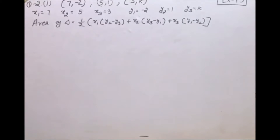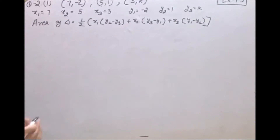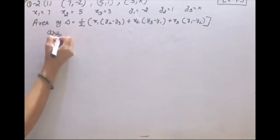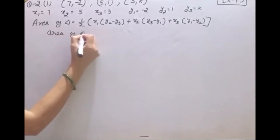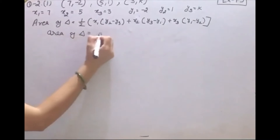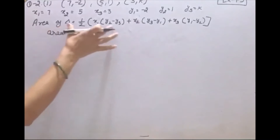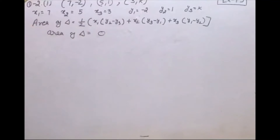Coordinate geometry में collinear condition given होती है तो हमारे पास triangle का जो area है उसको equal to 0 put करेंगे। तो given है हमारे पास collinear points, condition हो जाएगी: area of triangle equal to 0। यह हमारे पास condition होती है जब collinear points given होते हैं।